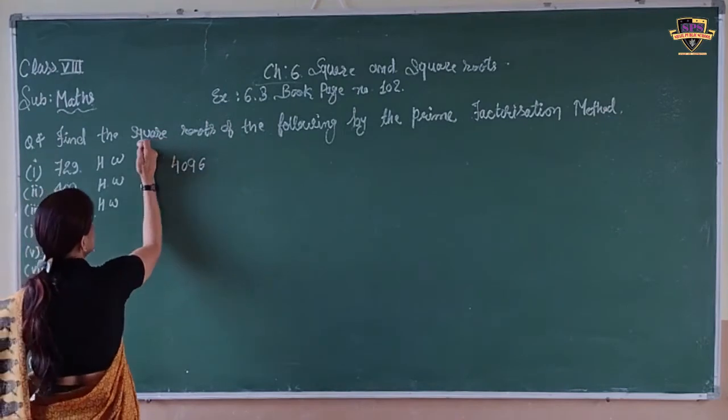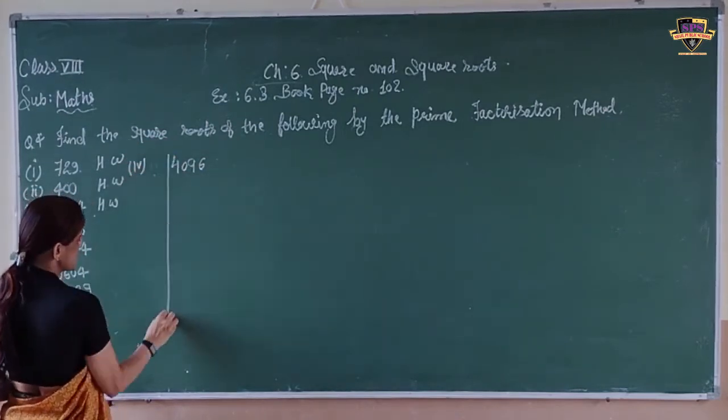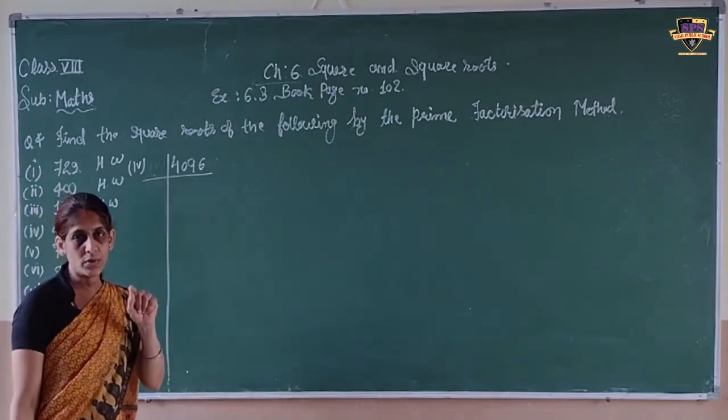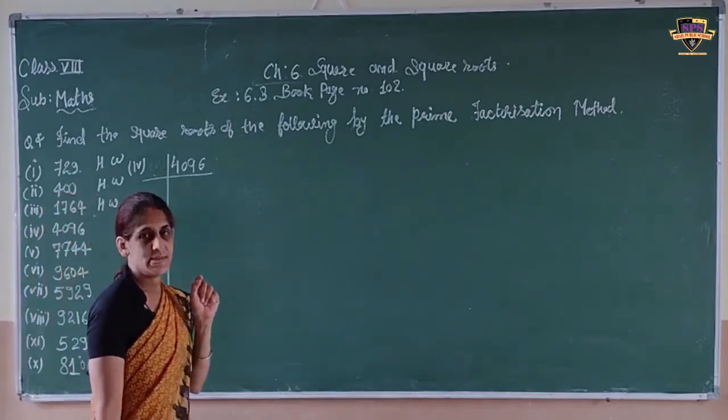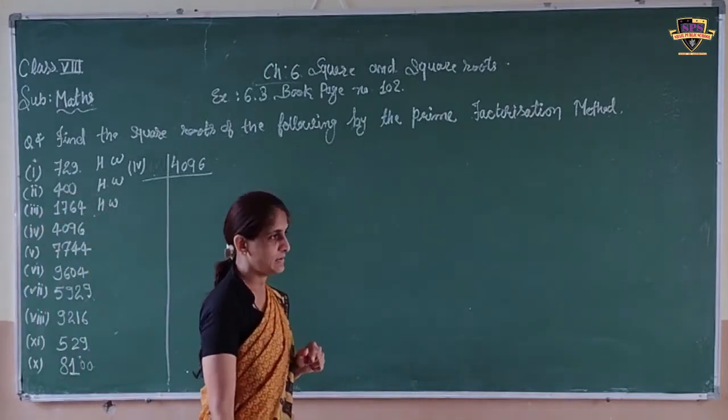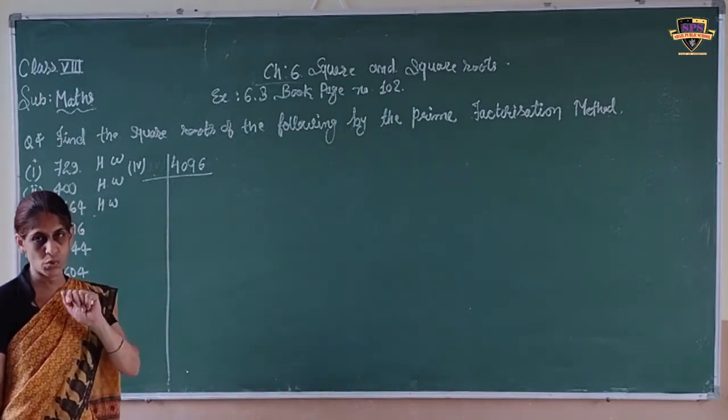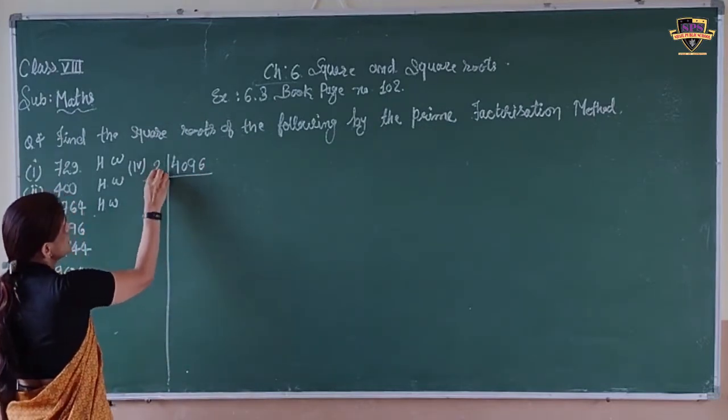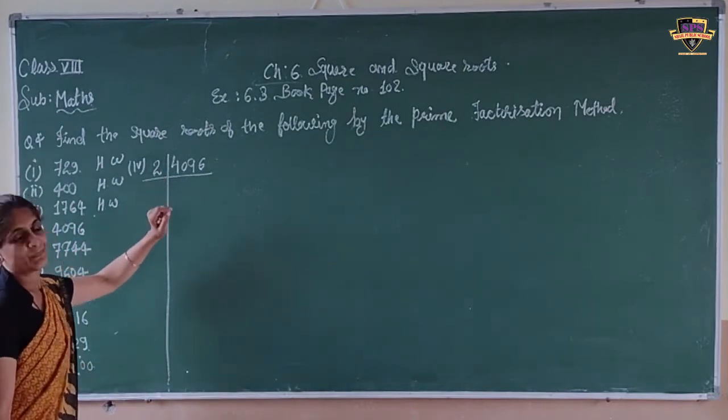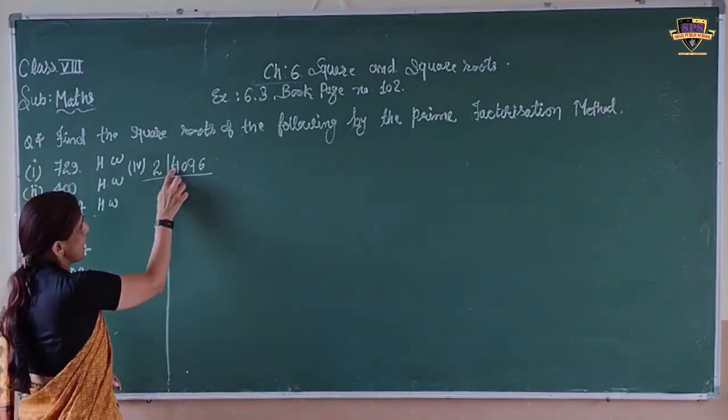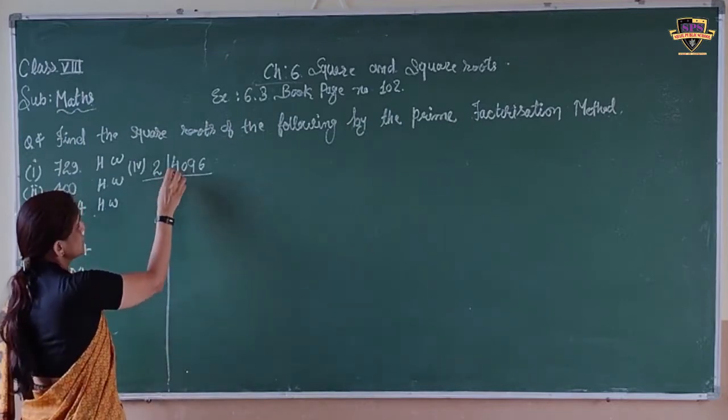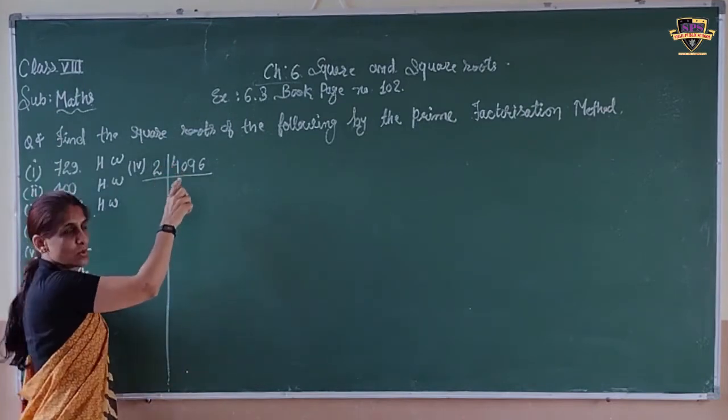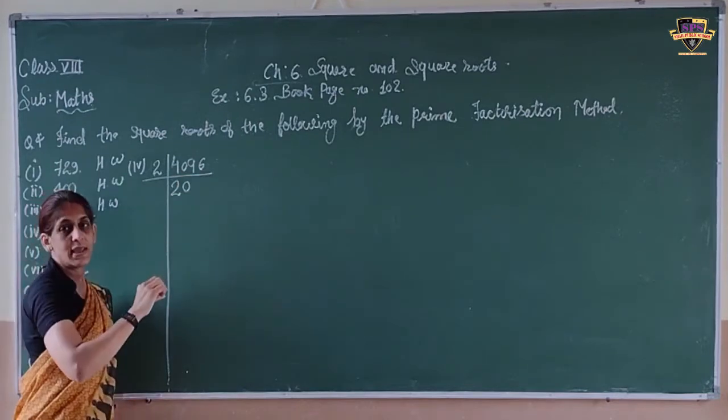Now, start the prime factorization of this number. The rules of prime factorization: a number is even if the number is ending with 0, 2, 4, 6, and 8. That number will be divided by 2 only. Here, at the end of the number, since it is 6, this number should be divided by 2. Now, 4 divided by 2 is 2.